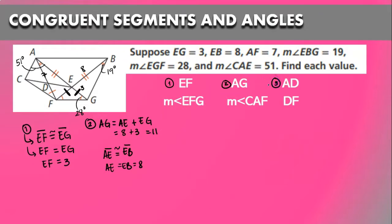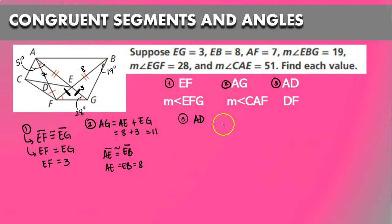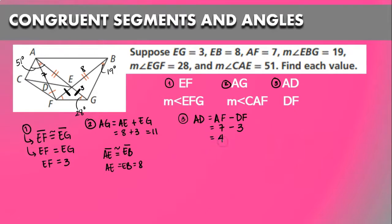Next is AD. AD is going to be the same as AF minus DF. We know AF is 7, and DF is 3, so AD equals 7 minus 3, which is 4.